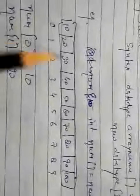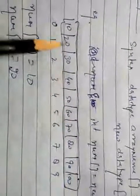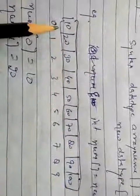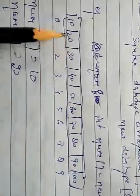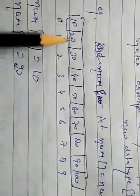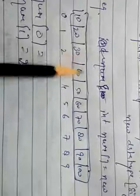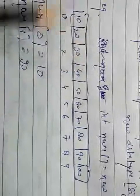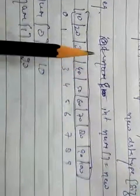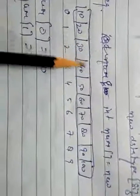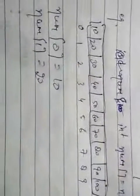This will be stored in memory in this form. There are 10 boxes and each box has integer-size memory, so each box has 4 bytes of memory. The total memory occupied by this array is 40 bytes — the size of the array is 10, so 10 times 4 equals 40 bytes.